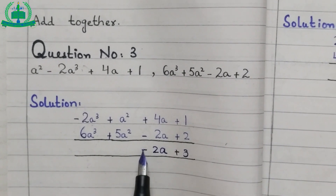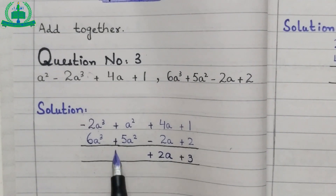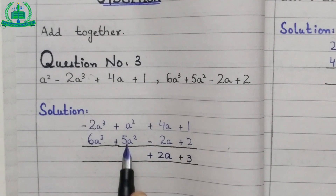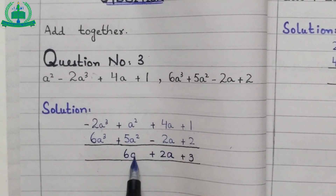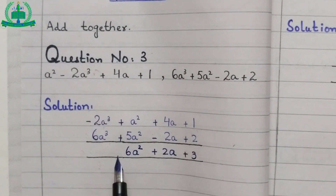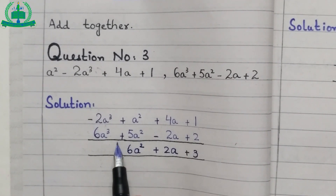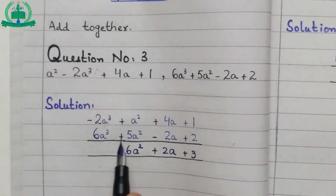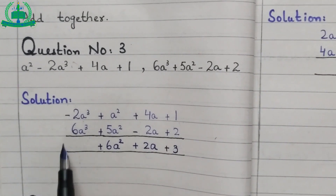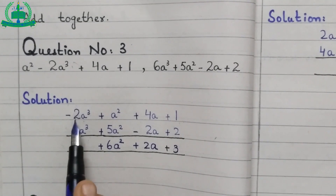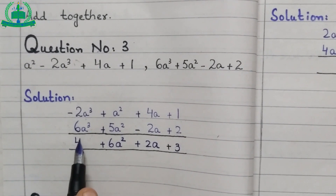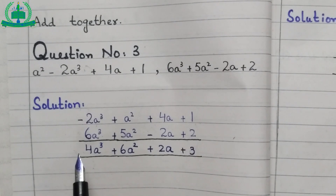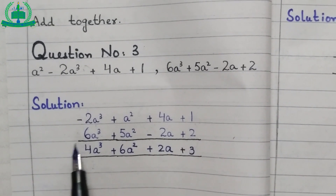For the a square terms: a square plus 5a square plus minus gives 6a square. The larger digit is 5 and it has a plus sign, so we write plus 6a square. For the a cube terms: minus 2a cube plus 6a cube gives 4a cube. When there is no sign at the beginning of the equation...